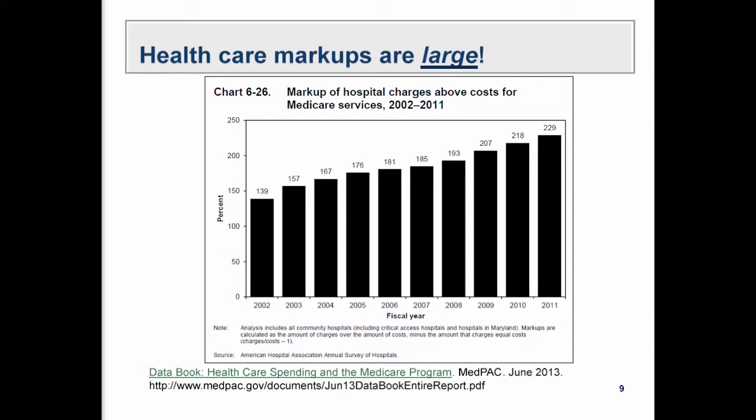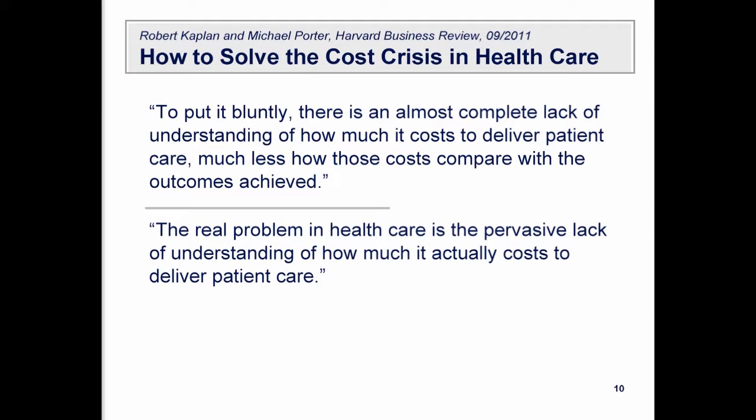I want to reiterate: when you look at billed charges in healthcare, especially on the hospital and health system side, the markups are huge and they've been growing over time. This graphic taken from Medicare shows that as recently as 2002, prices were marked up 139% on average — so a hundred-dollar cost would turn into two hundred and thirty-nine dollars on the patient's bill. By 2011, the markup was 229%, and it's grown significantly since then.